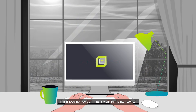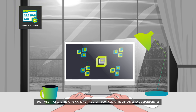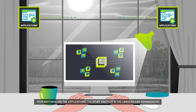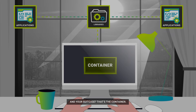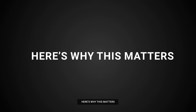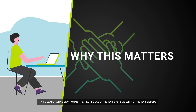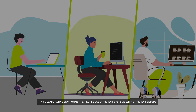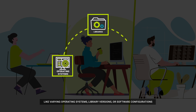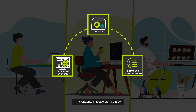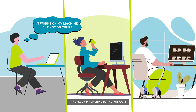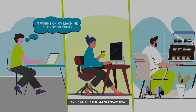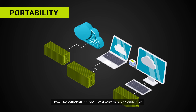This is exactly how containers work in the tech world. Your meetings are the applications, the stuff you pack is the libraries and dependencies, and your suitcase — that's the container. Here's why this matters: in collaborative environments, people use different systems with different setups, like varying operating systems, library versions, or software configurations. This creates the classic problem: it works on my machine but not on yours. Containers fix this.